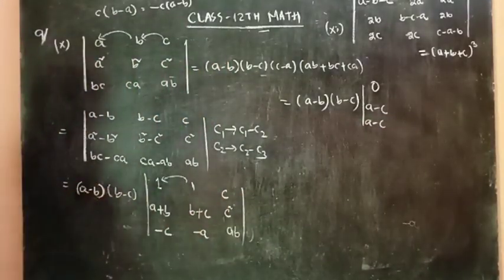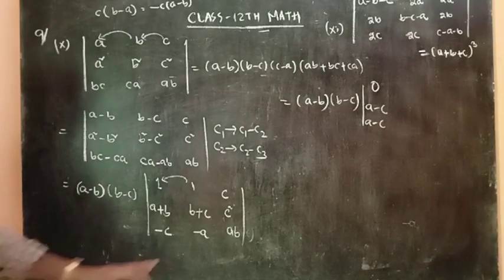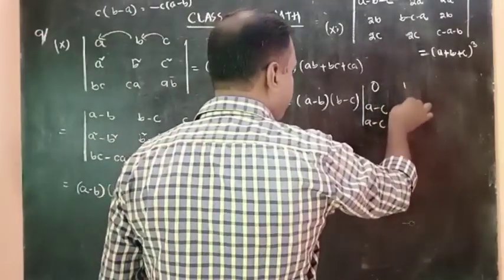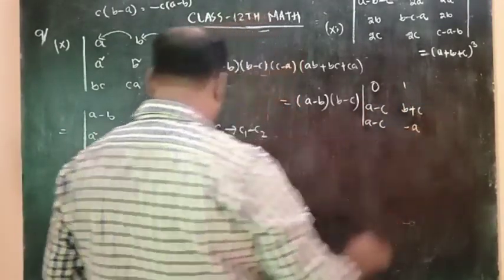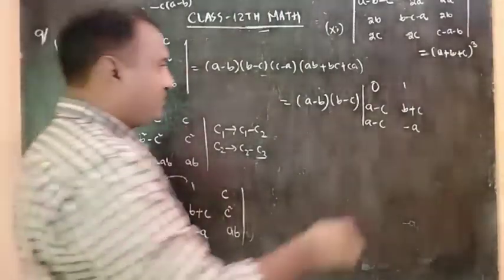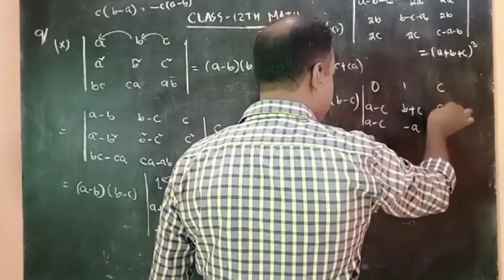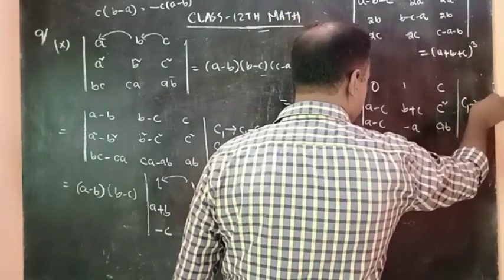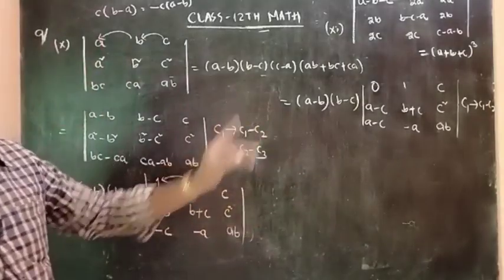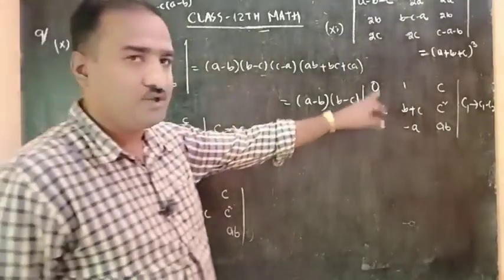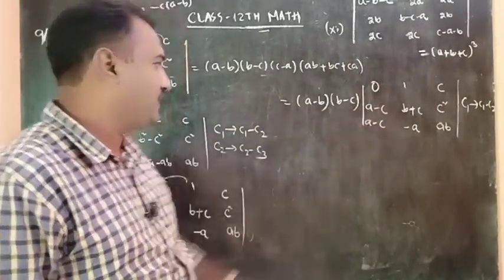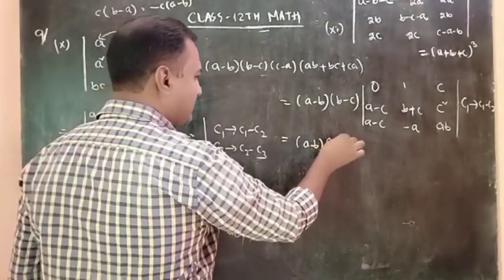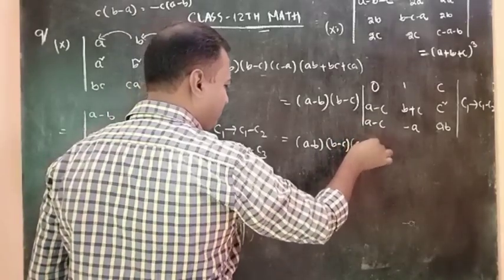Column 2: we have a subtraction, so minus C, minus of minus C gives plus C, giving A minus C. So the entries become: 1, B plus C, minus C. Then C, C squared, AB. Again, column 1 minus C gives A minus C, then column 3 also gives A minus C. So A minus C, B minus A and A minus C to column 1.